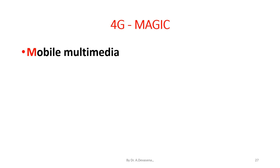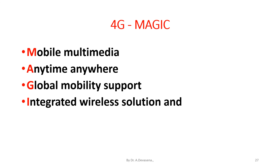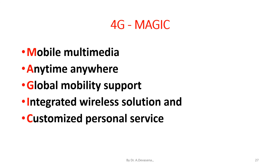The key characteristics of 4G are summarized by the acronym MAGIC: Mobile multimedia, Anytime/anywhere access, Global mobility support, Integrated wireless solutions, and Customized personal service. The first letters of each characteristic spell out the term MAGIC in 4G.